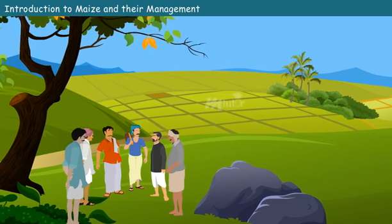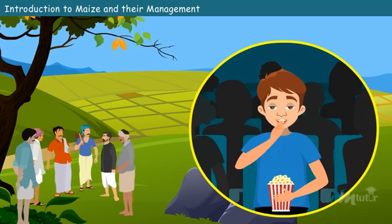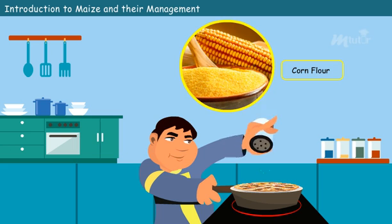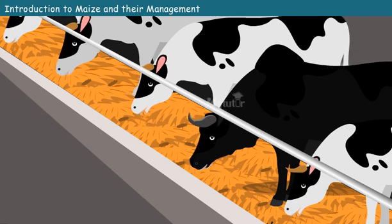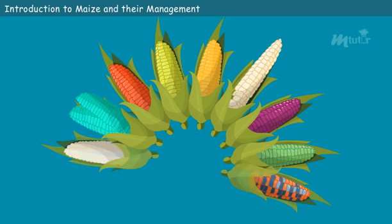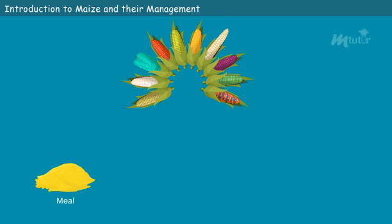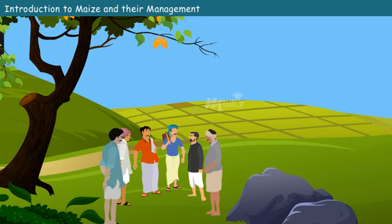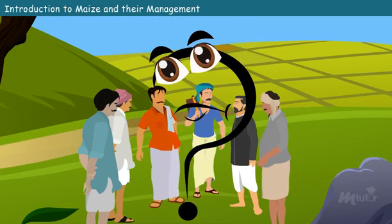We, the maize farmers, help in serving tasty popcorn during leisure activities, adding nutrients to various food items through corn flour, resolving starvation of farm animals through fodder, and helping automobiles as biofuel. In addition, we supply corn which is processed and used in many ways by the common people. Are we happy as cultivators? Our answer is definitely no.